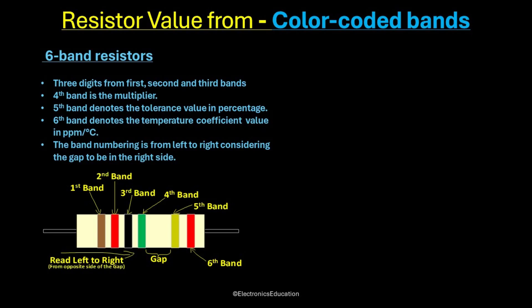Here, the first five bands are same as five band scheme. The sixth color band describes the temperature dependency of the resistor value. Meaning, how the resistance value changes with change in temperature. This value is in part per million, or ppm per degree centigrade.